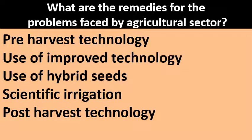What are the remedies for problems faced by the agricultural sector? Pre-harvest technology, use of improved technology, use of hybrid seeds, scientific irrigation, and post-harvest technology are the remedies for problems faced by the agricultural sector.